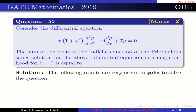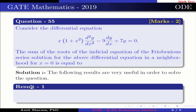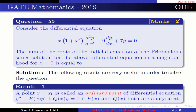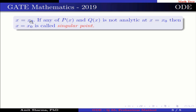The following results are very useful in order to solve the equation. Result number 1: A point x = x₀ is called an ordinary point of the differential equation y'' + p(x)y' + q(x)y = 0 if p(x) and q(x) are both analytic at x₀. If p(x) and q(x) are not analytic at x = 0, then x = 0 is called a singular point.